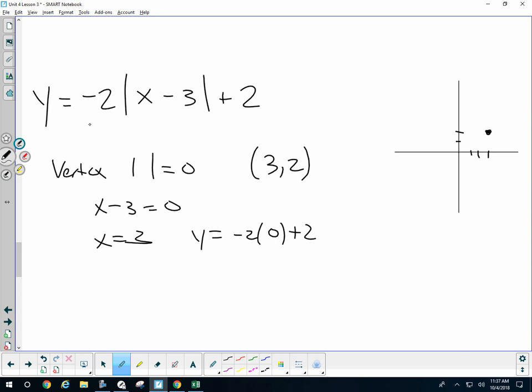Now, without knowing that I have a negative 2 there, just by doing the one more point, without doing anything crazy, well, y of 4. Let's find when x is 4. I get negative 2 times 4 minus 3 plus 2. That's negative 2 plus 2, which is 0.